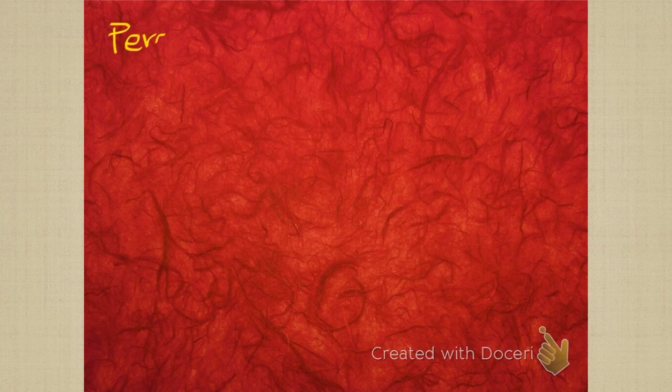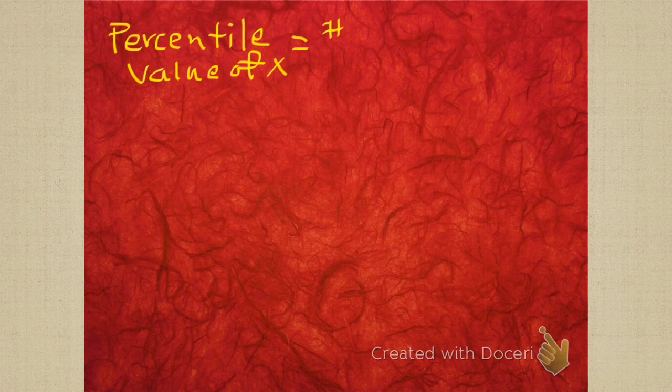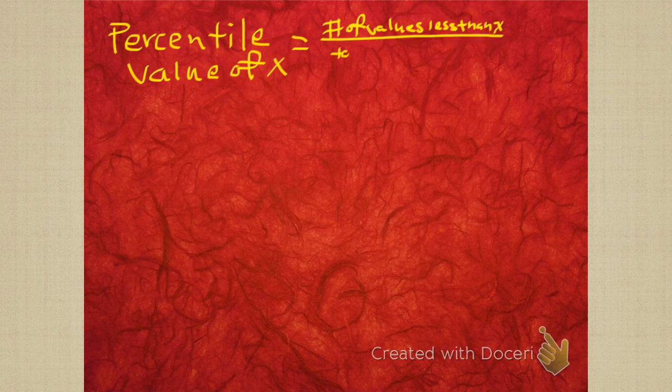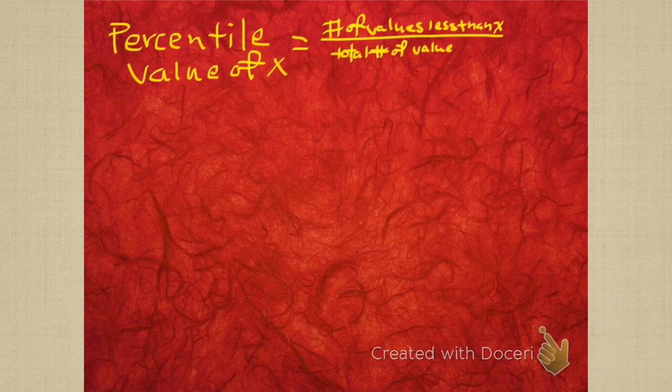Here we go. What are we trying to do? We're trying to find the percentile value of a piece of data in a data set. It's going to be the number of values that is less than that data divided by the total number of values. So I guess we should get some values in this data set.